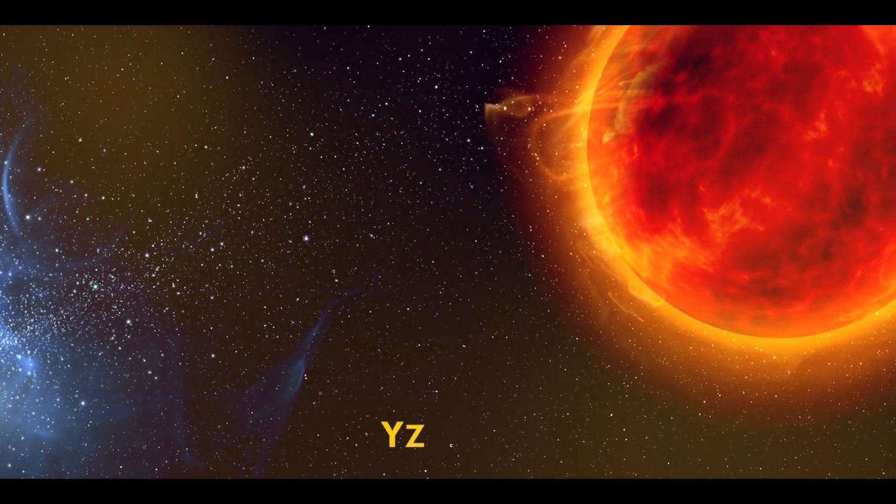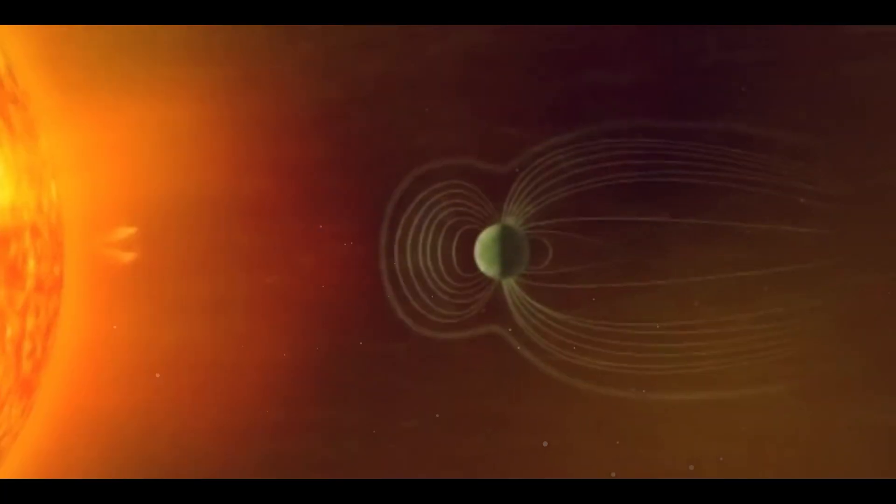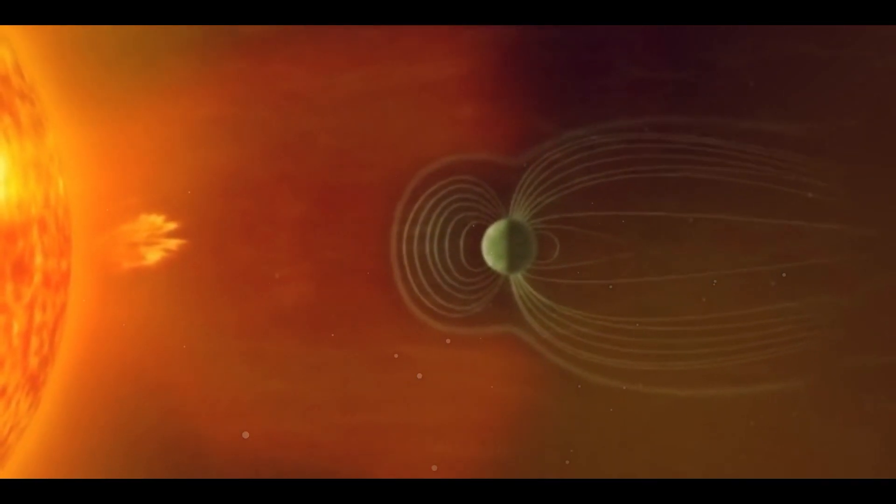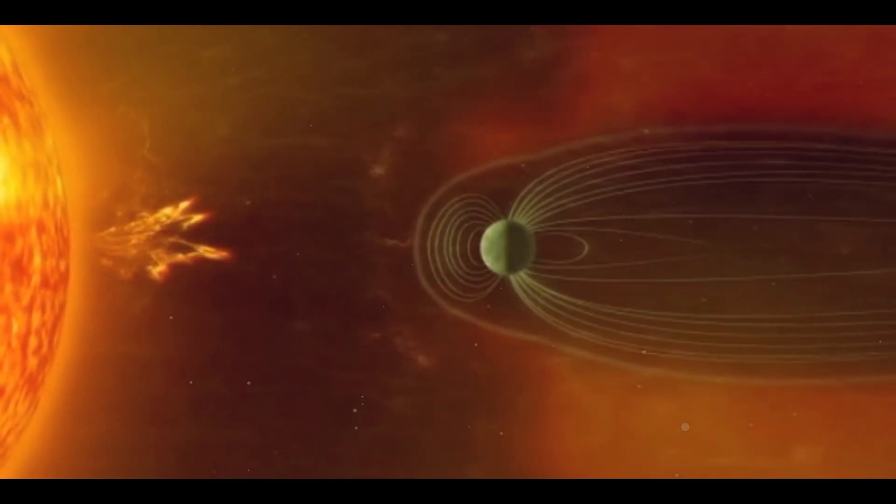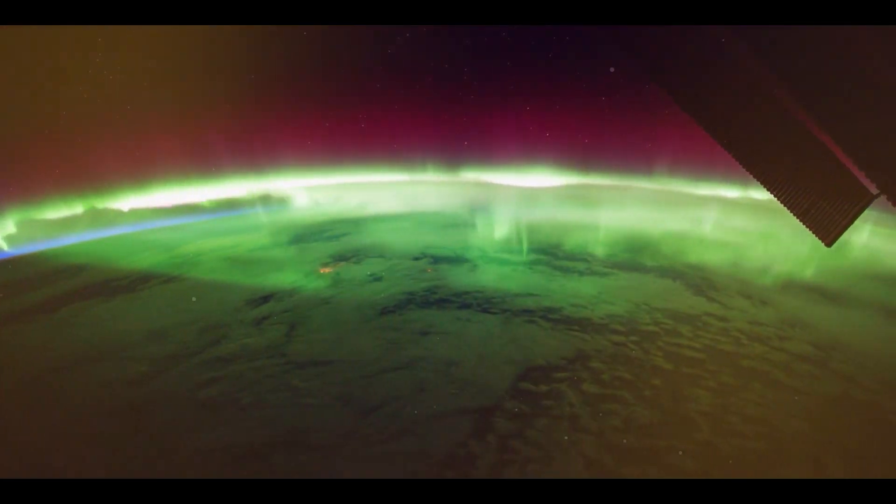It orbits the red dwarf star YZCD. Researchers speculate that the signals are caused by an interaction between the planet's magnetic field and the star it orbits, similar to Earth's aurora borealis.